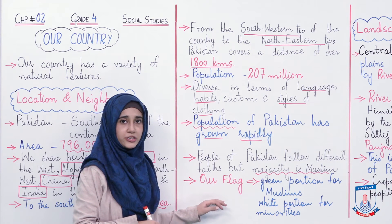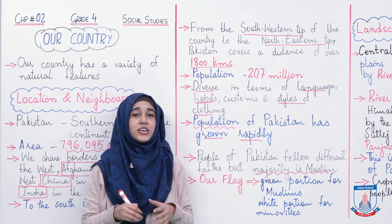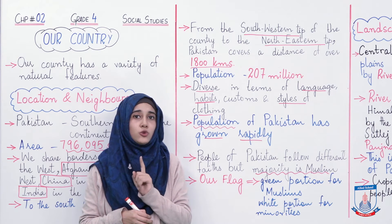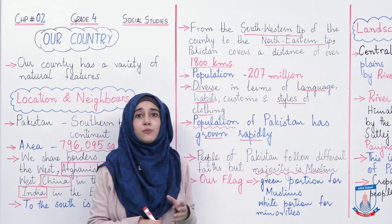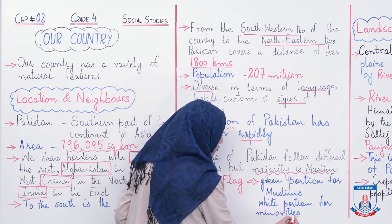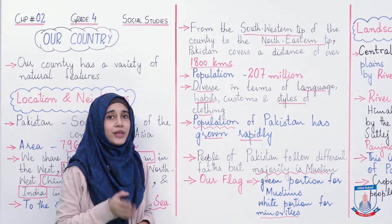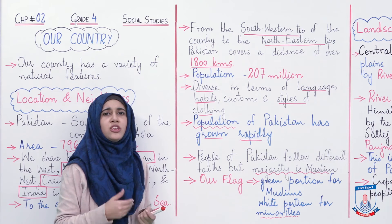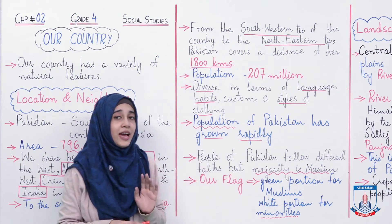Now talking about the flag of our country. Is ke andar jo green portion hai woh hai Musalmaanon ke liye. Aap ne dekha hoga ke humaare mulk ka jo jhanda hai us mein zyada tar portion green hai — sirf ek side pe thoda sa portion hai jo white hota hai aur ek chaand sitaara bana hua hai jo white hai, baaki sara flag green hai. Toh woh green portion kisko represent karta hai — Muslims ko, kyunki humaare mulk mein majority Musalmaanon ki hai. And then white portion is for minorities. Minorities woh log hain jo thodi tadaad mein hain — Sikh, Christian yaani Isaai, Parsi, Hindu — unhe represent karne ke liye humaare jhande mein white portion hai.